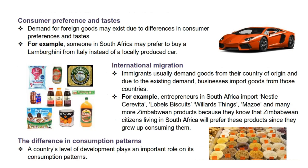Next is consumer preference and tastes. Demand for foreign goods may exist due to differences in consumer preferences and tastes. For example, someone in South Africa may prefer to buy a Lamborghini from Italy instead of a locally produced car.